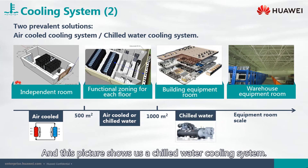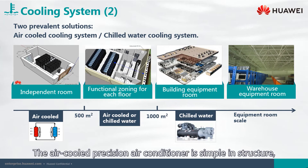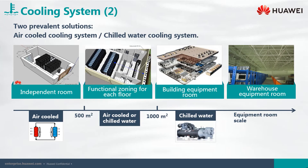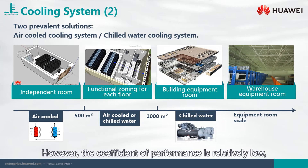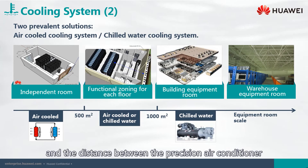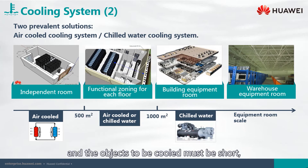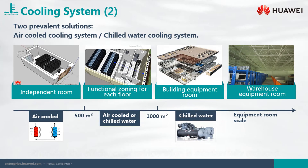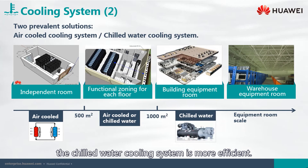The air-cooled precision air conditioner is simple in structure, offers easy and quick installation, and is cost-efficient. However, the coefficient of performance is relatively low, and the distance between the precision air conditioner and the objects to be cooled must be short, otherwise the efficiency of refrigeration is substantially reduced. Concerning heat transfer, the chilled water cooling system is more efficient.